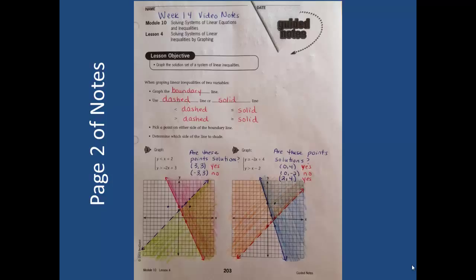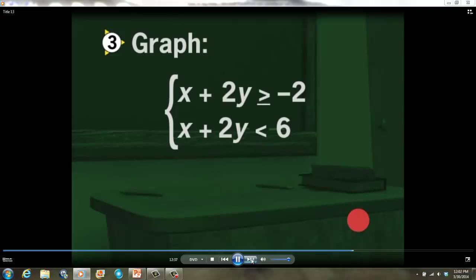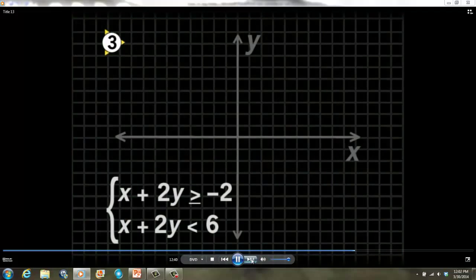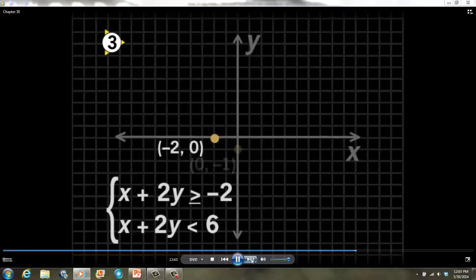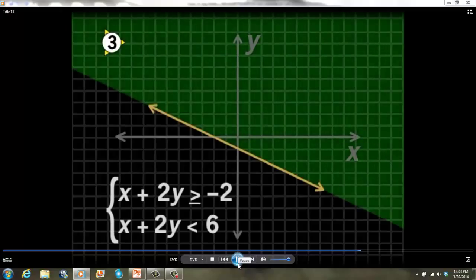You should now have page 2 of your video notes completed — take a moment to catch up if necessary. In question 3 of your guided notes, graph the solution set to the system: x plus 2y is greater than or equal to negative 2, and x plus 2y is less than 6. The first inequality's boundary line passes through (-2, 0) and (0, -1). The boundary line is solid, and since (0, 0) makes the inequality true, shade the same side as the test point (0, 0).